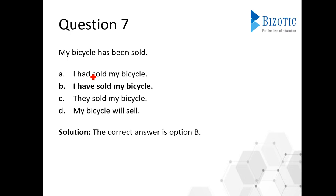The correct answer is 'have' — option B: 'I have sold my bicycle.' The passive uses 'has been,' so when we change to active voice we use 'have,' not 'had.' That's the answer: 'I have sold my bicycle.'